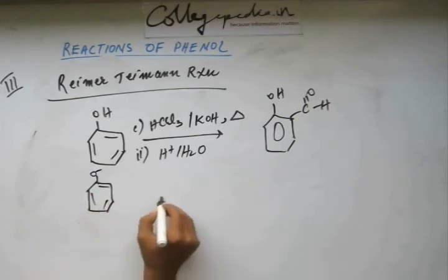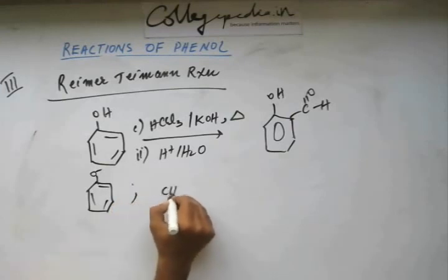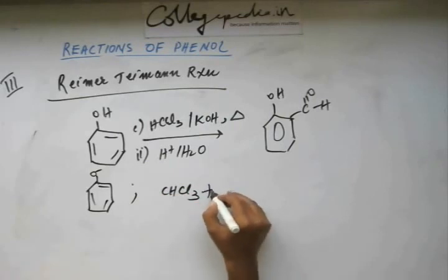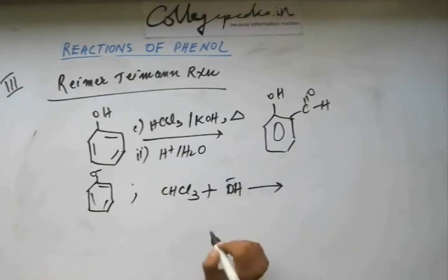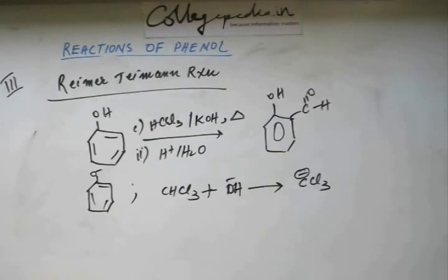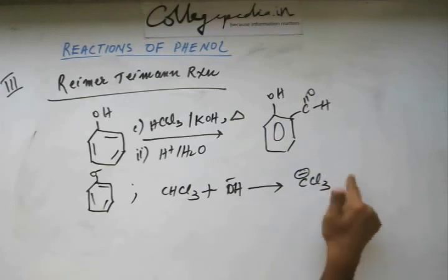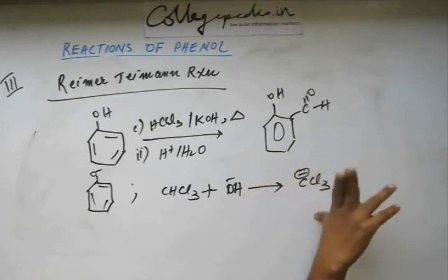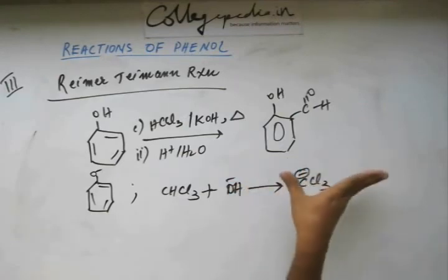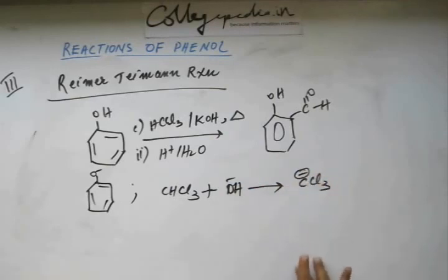Step two: base also abstracts hydrogen from chloroform, because hydrogen on chloroform is also sufficiently acidic. When hydrogen leaves, the negative charge on carbon is stabilized — first by the inductive effect of the three chlorine atoms, and second by d-orbital resonance. Chlorine has empty d orbitals and the negative charge can be delocalized into those d orbitals. Because of these two reasons, this negative charge on the trichloromethyl carbanion is sufficiently stable.